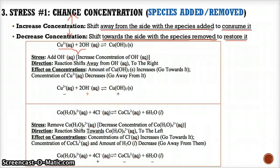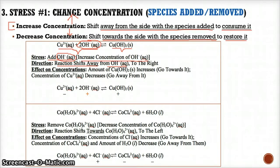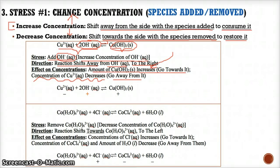First example: Cu²⁺(aq) + 2OH⁻(aq) ⇌ Cu(OH)₂(s). We are adding OH⁻, so circle OH⁻. Since we're adding OH⁻, we're increasing its concentration too high. To address this, we shift away from the left which contains OH⁻ to consume it, bringing it back down to equilibrium levels. The reaction shifts to the right. Since we're shifting towards Cu(OH)₂(s), its amount increases. On the other hand, the concentration of Cu²⁺(aq) decreases since we're going away from it.